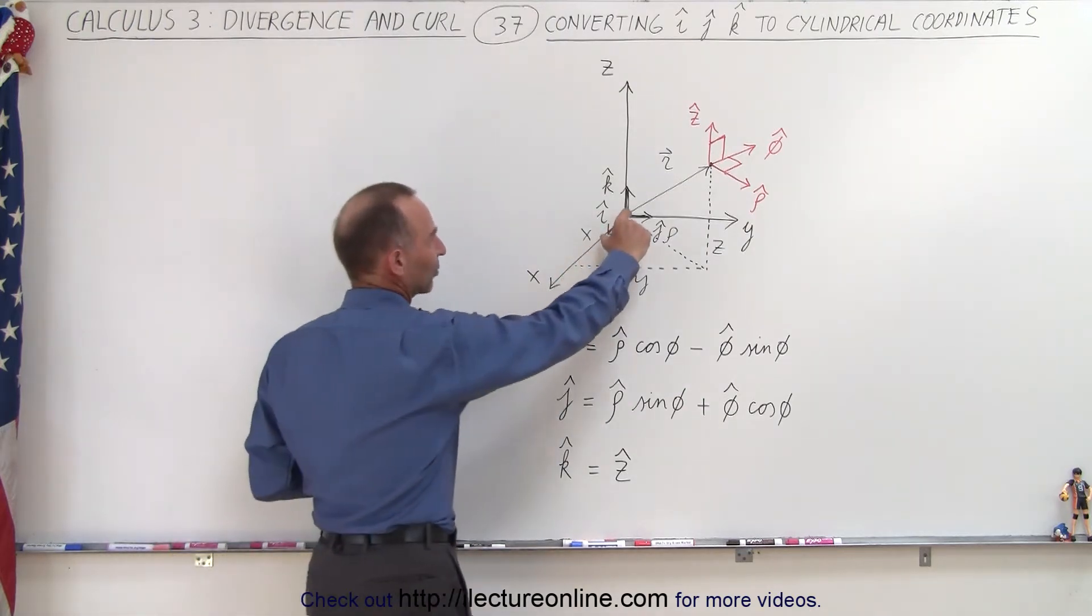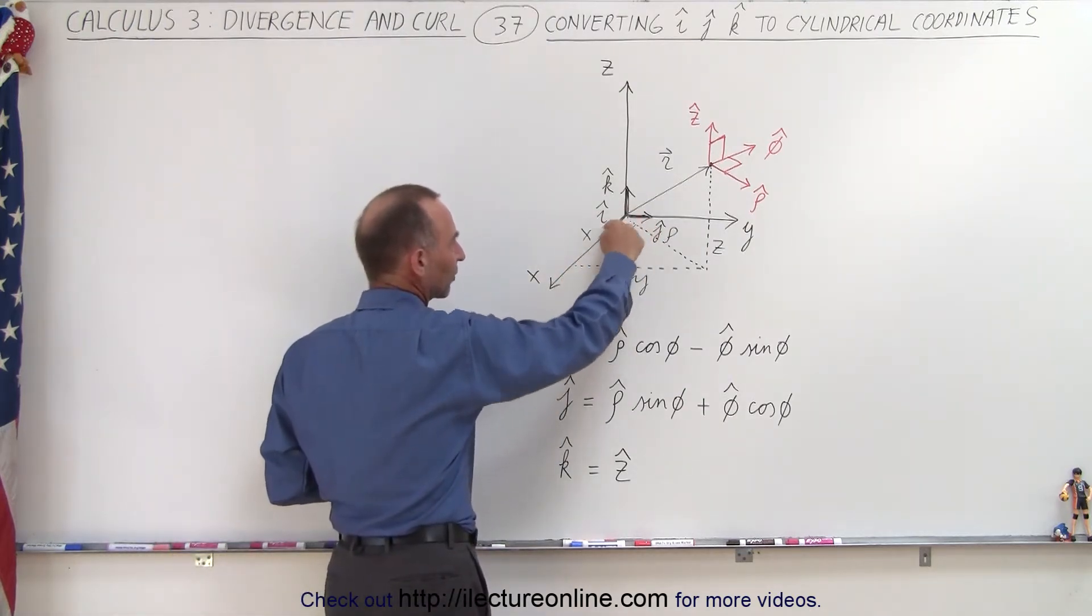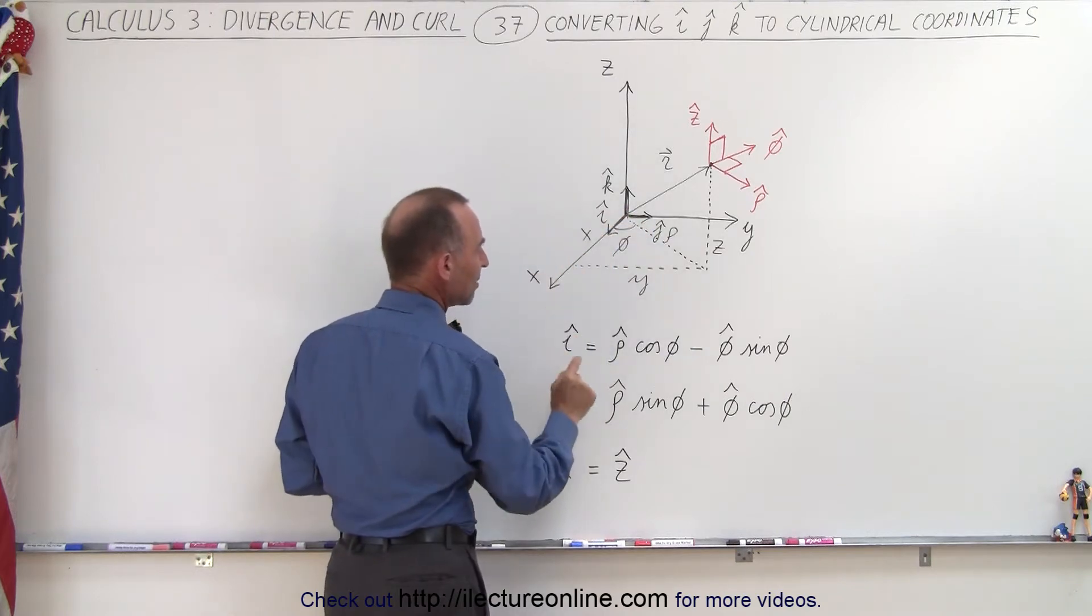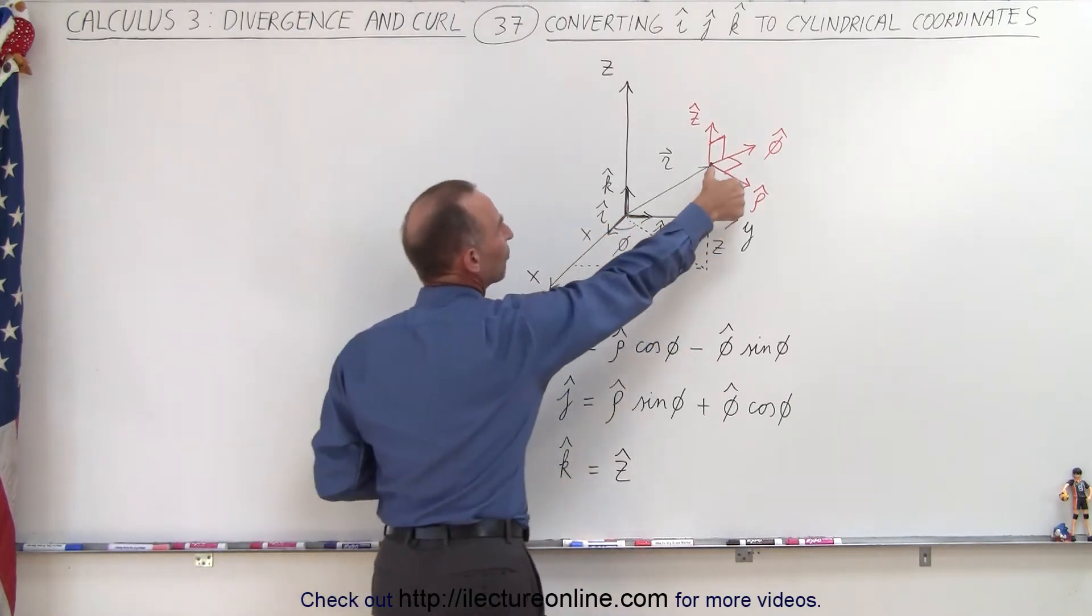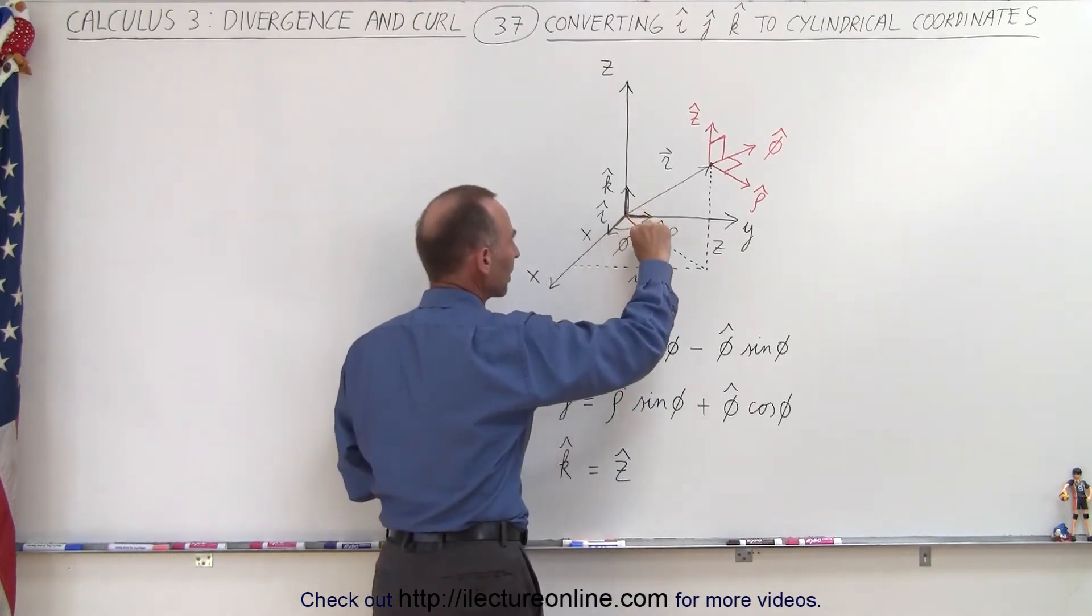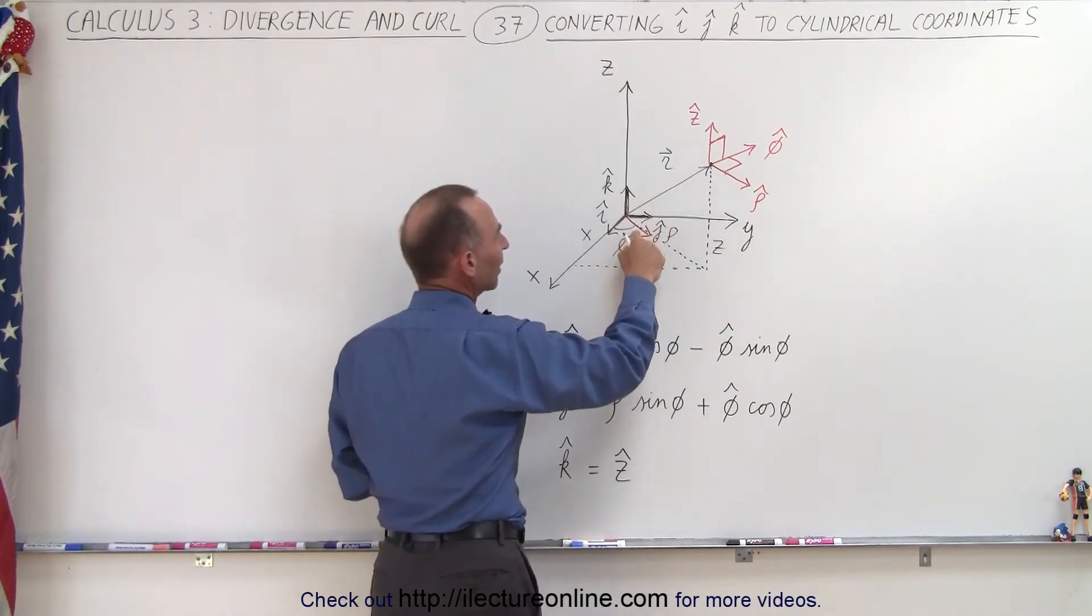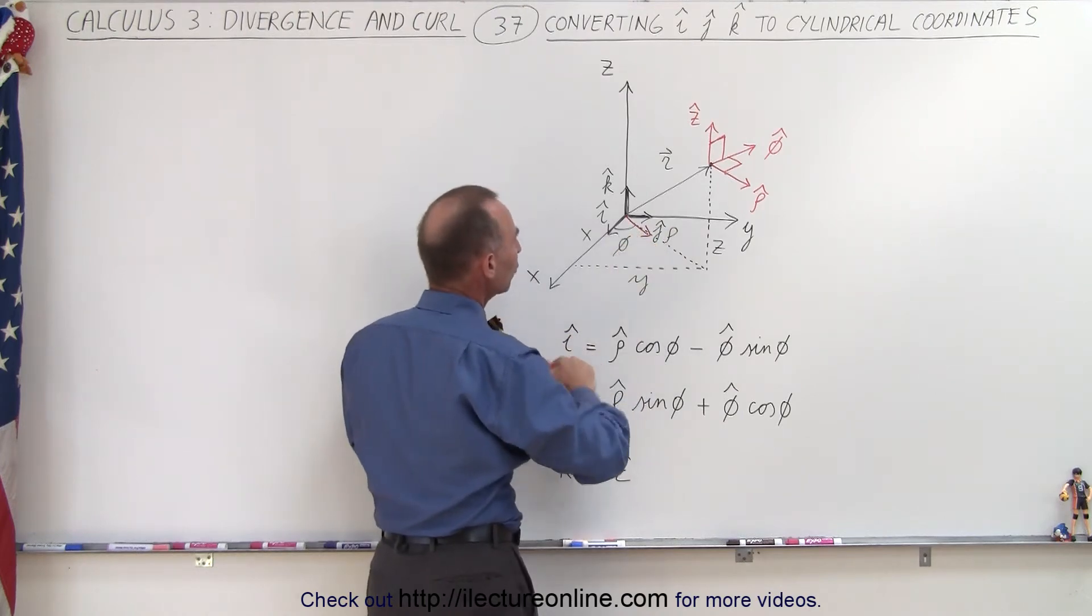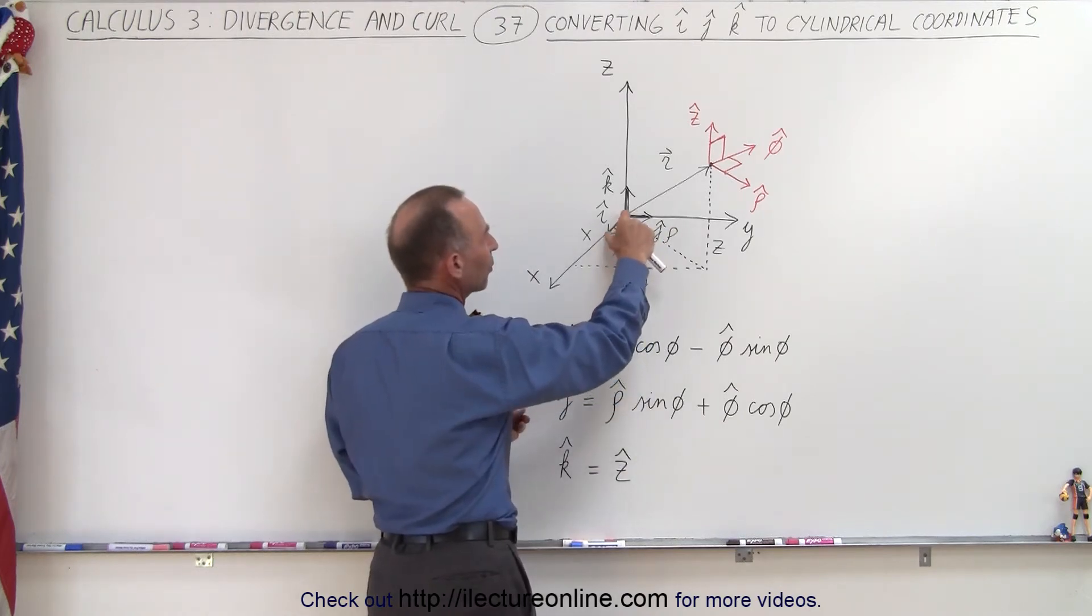So the i vector here, the unit vector in the x direction, can be found by taking the unit vector in the row direction, which would be this vector right here, so we can go ahead and draw it right here, and multiply that vector times the cosine of the angle phi to get this component right here.